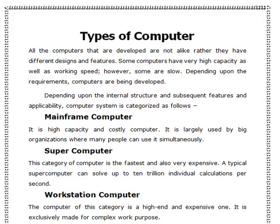All the computers that are developed are not alike. Rather, they have different designs and features. Some computers have very high capacity as well as working speed, while some are slow. Depending on the requirements, computers are being developed. Depending upon the internal structure and subsequent features and applicability, computer systems are categorized as follows.